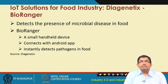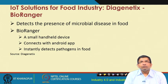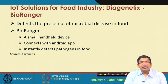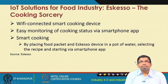Diagenetics has a product called the Bio Ranger, which can help in detecting the presence of microbial diseases in food. The Bio Ranger is a small handheld device that connects with an Android app and instantly detects pathogens in food products.